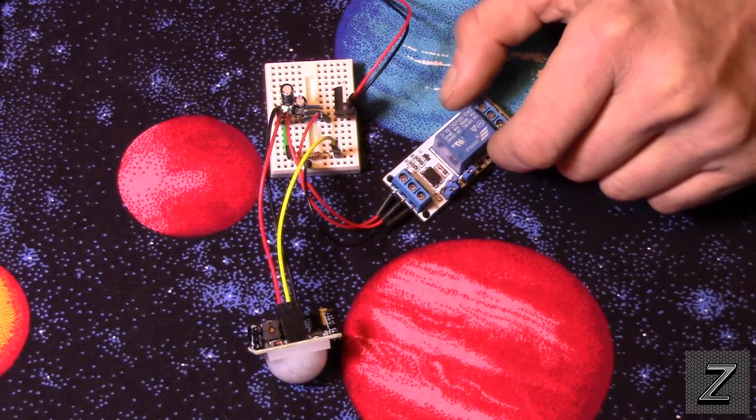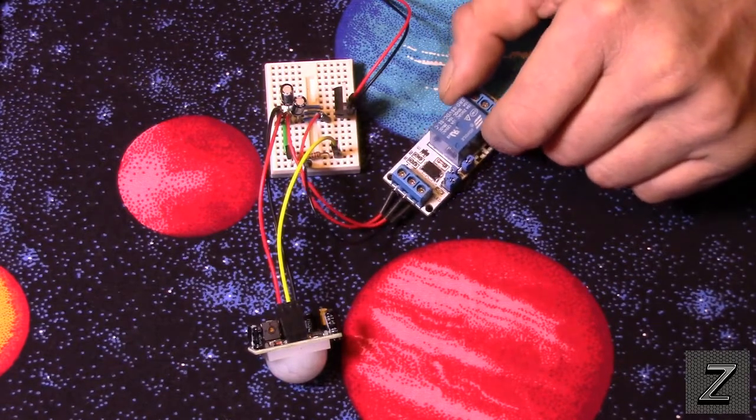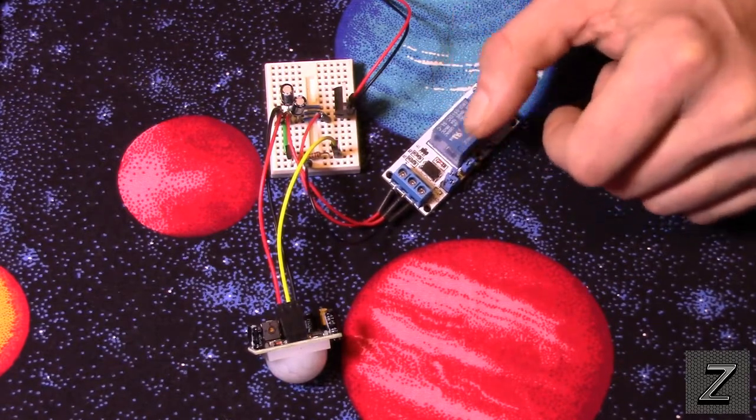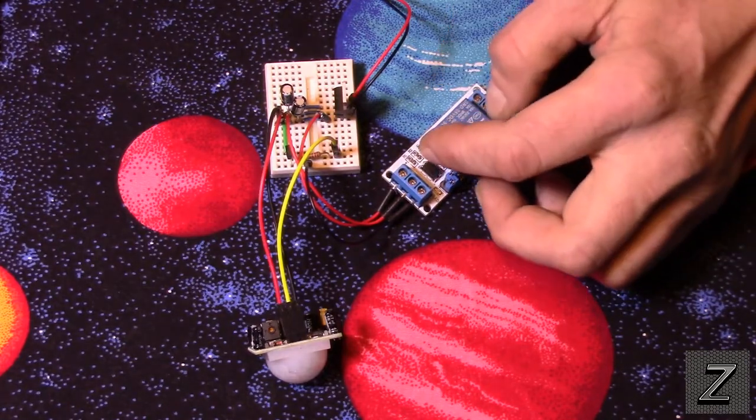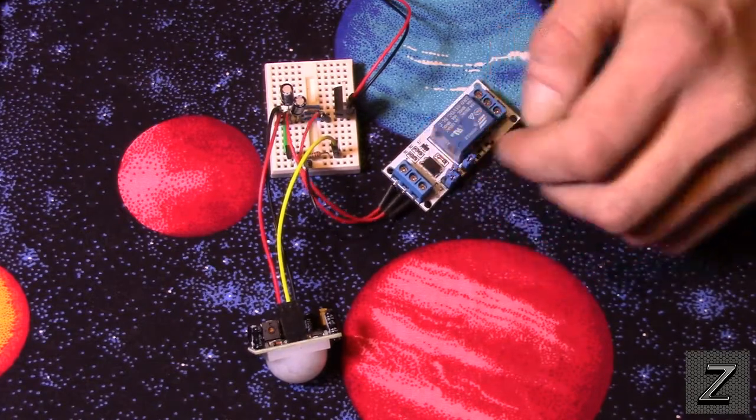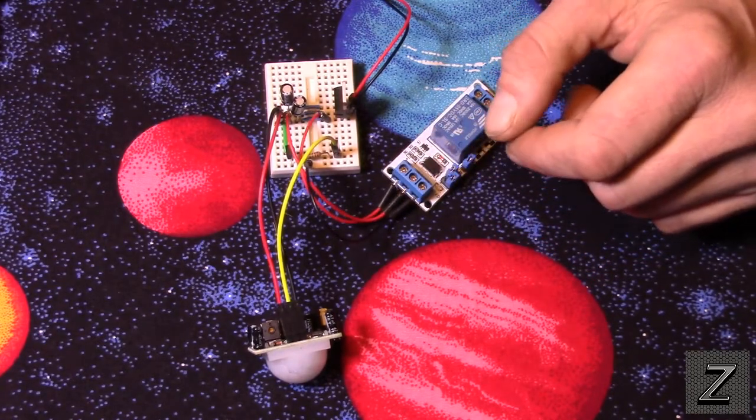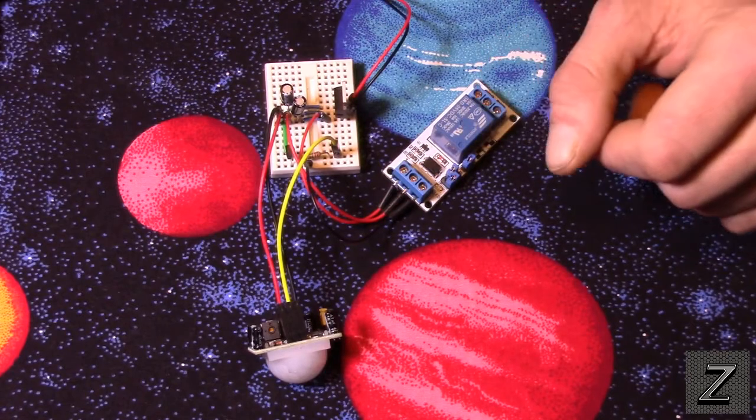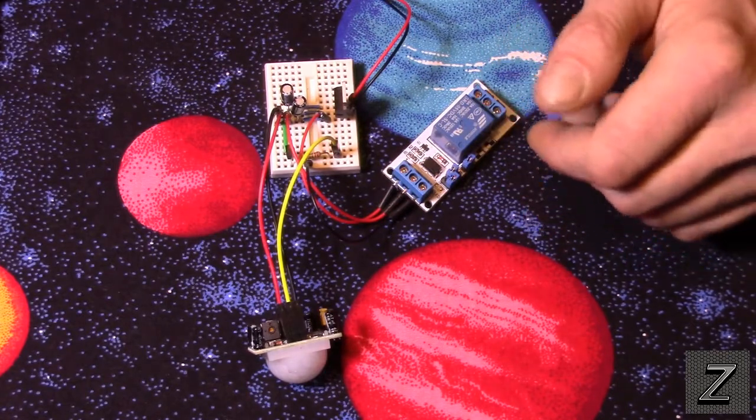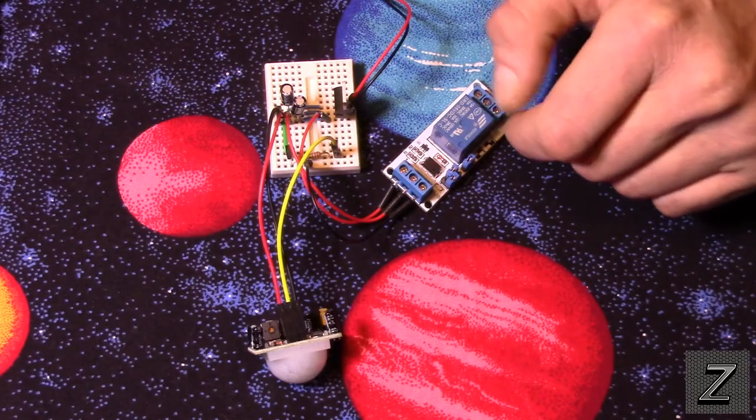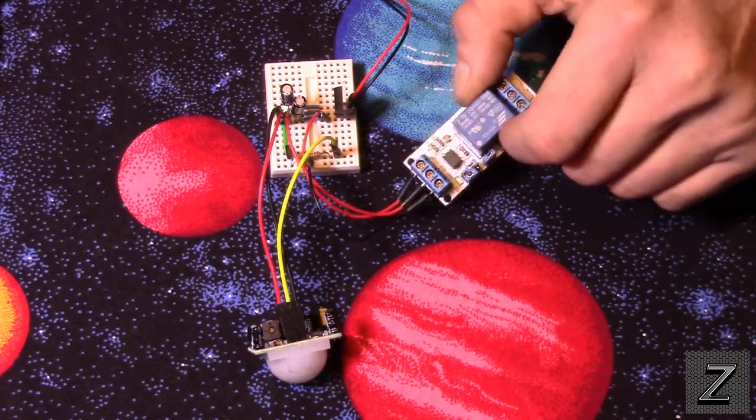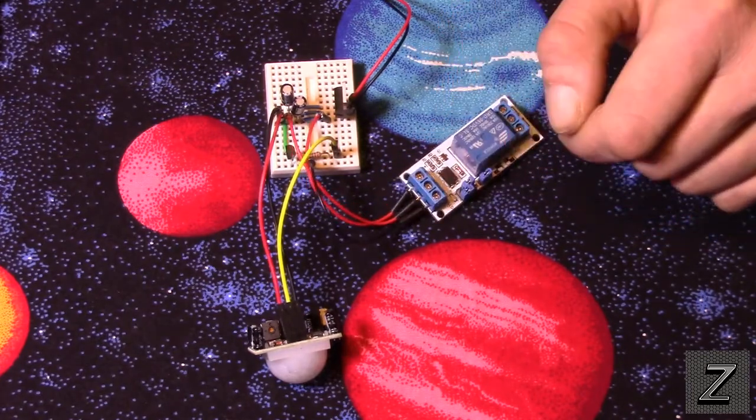But especially if you're using the little CFLs or LED light bulbs, you could run them off this easily. Your big floodlights might be drawn a little too much. You'll have to look at the bulb that you'd be using if you're using this to activate a floodlight, and make sure that it's not drawn more than 10 amps. And if it is, you just need to use a bigger relay board.